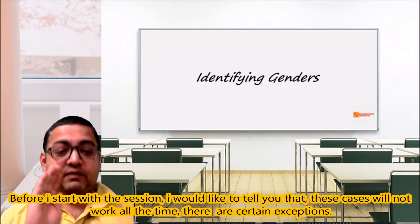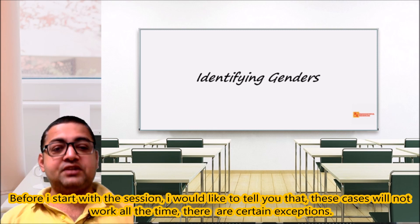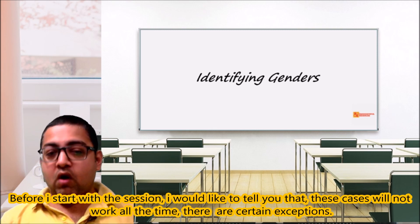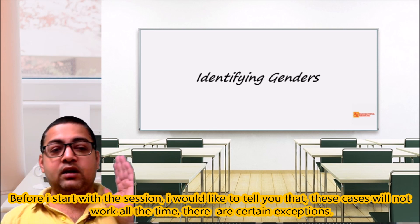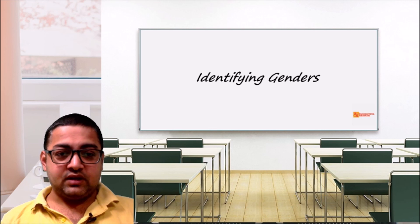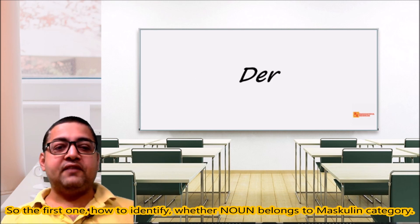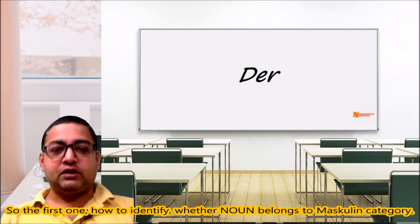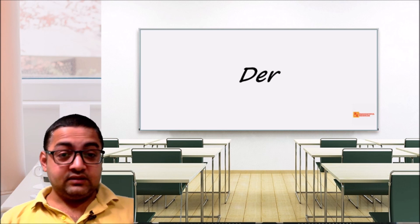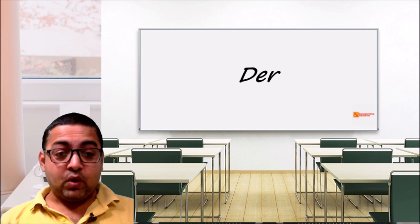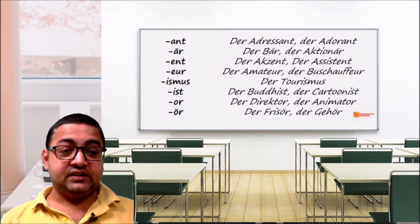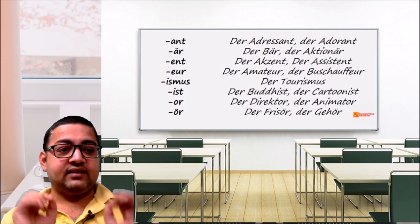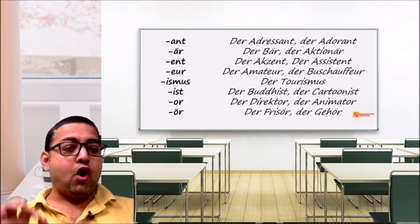Before I start with the session, I want to tell you that these rules will not work all the time — there are certain exceptions. So the first one: how to identify whether a noun belongs to the masculine category. There are certain suffixes — like -ant, -är, -or, -ist, -eur — which are generally used for masculine nouns.